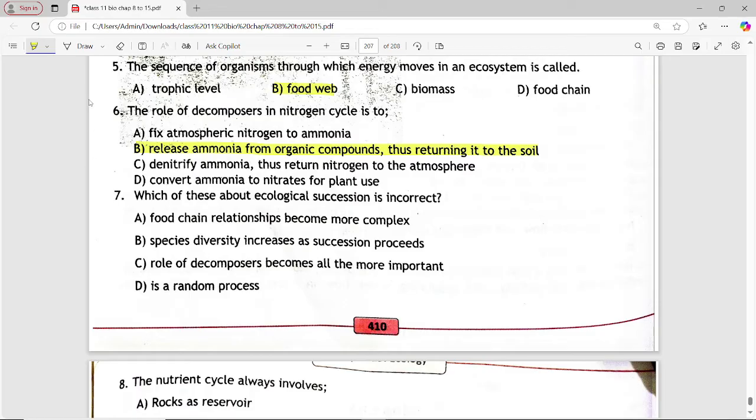Next MCQ is, which of these about ecological succession is incorrect? Options are food chain relationship become more complex, species diversity increases as succession proceed, role of decomposers become all the more important, is a random process. Answer is option d, is a random process.